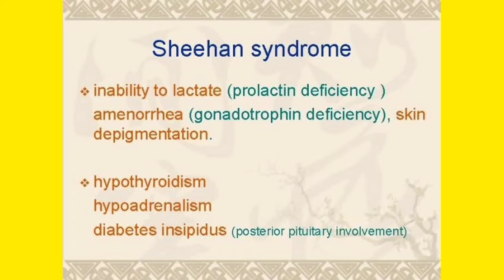Sheehan syndrome has the following characteristics. Number one: inability to lactate. These mothers will complain that they cannot properly lactate. This is because they have a deficiency of prolactin, the hormone required for lactation. As the pituitary gland is necrosed, there is deficiency of prolactin, and these mothers are unable to lactate.